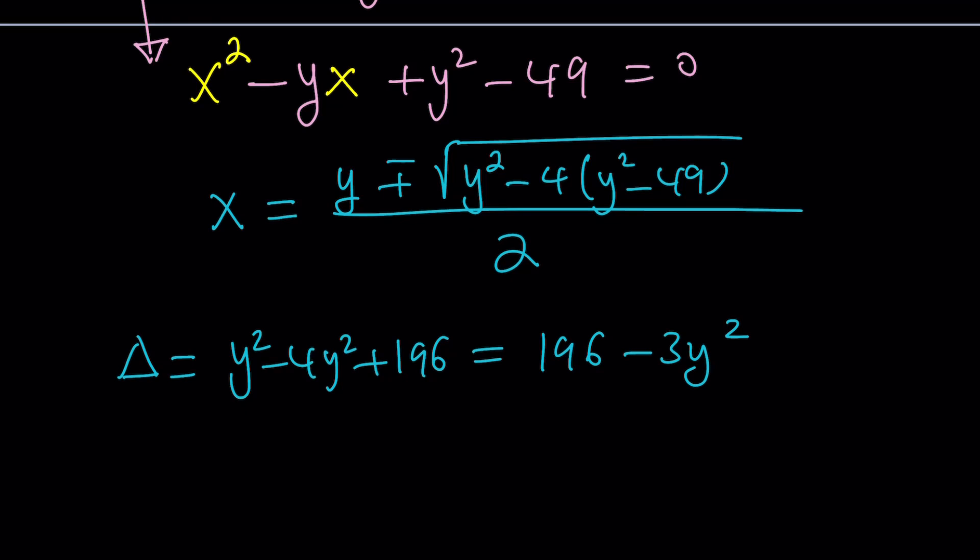So the expression inside the radical is super important because it's called the discriminant or delta. So delta is supposed to be y squared minus 4y squared plus 196, which can be simplified as 196 minus 3y squared. Now you want integer solutions, actually positive integer solutions. So x is a positive integer. Therefore, the expression inside the radical needs to be a perfect square because when we take the square root, it needs to come out. Let's focus on this being a perfect square now. So let's go ahead and set this discriminant equal to something like z squared, where z is an integer.